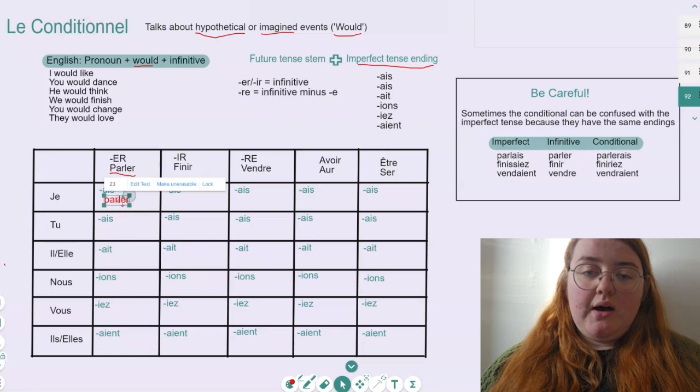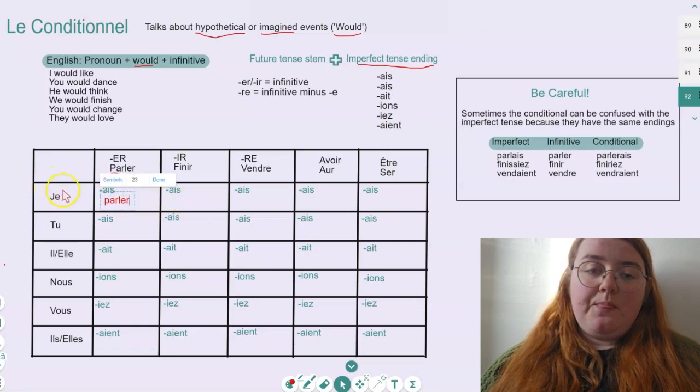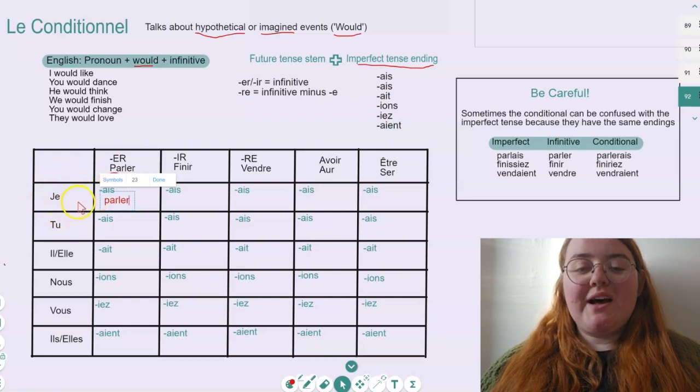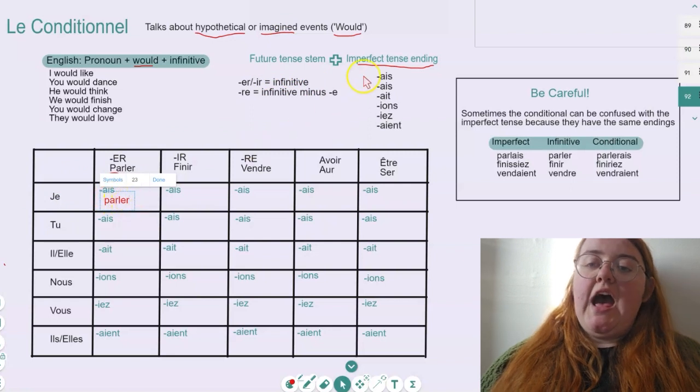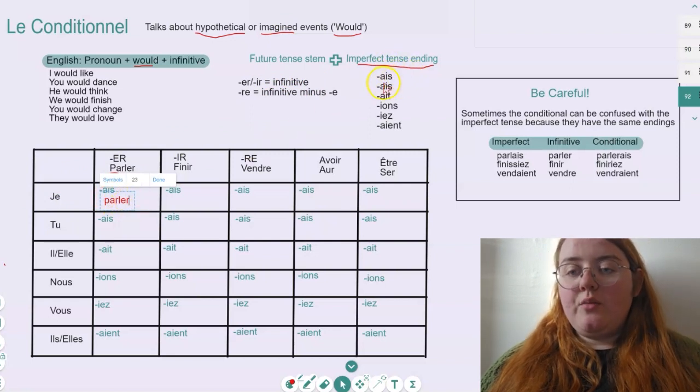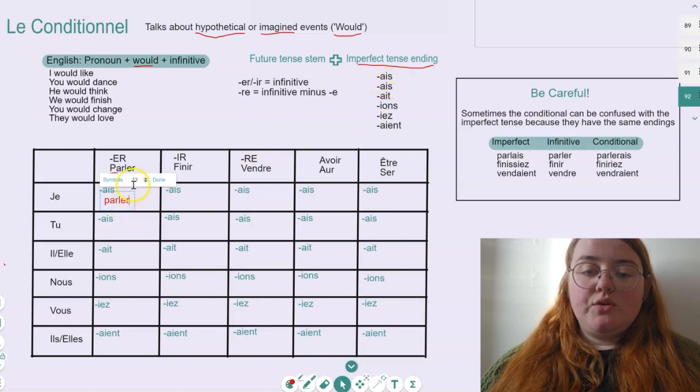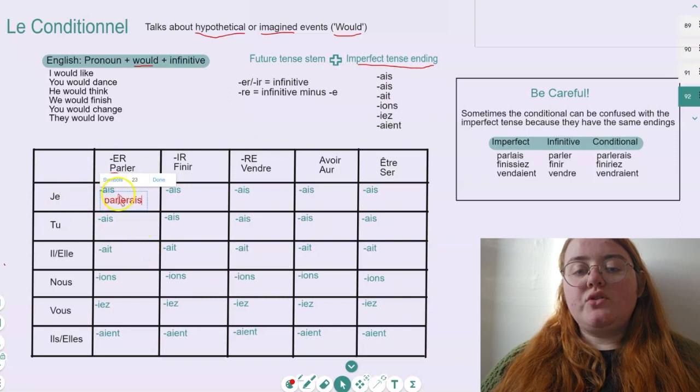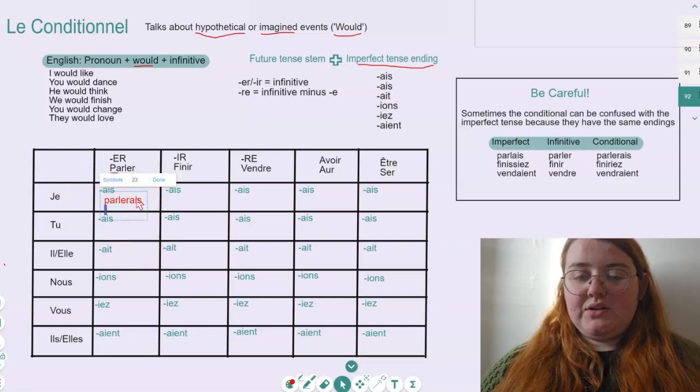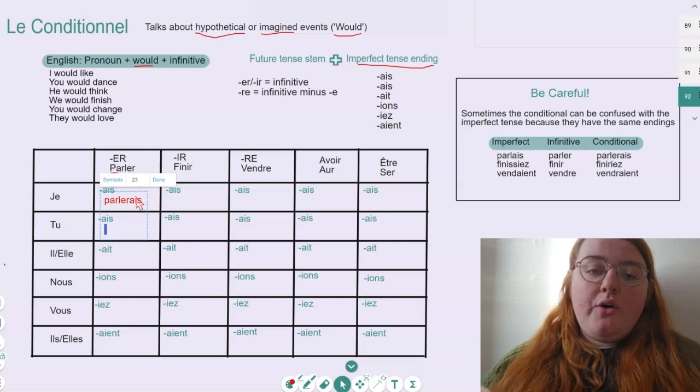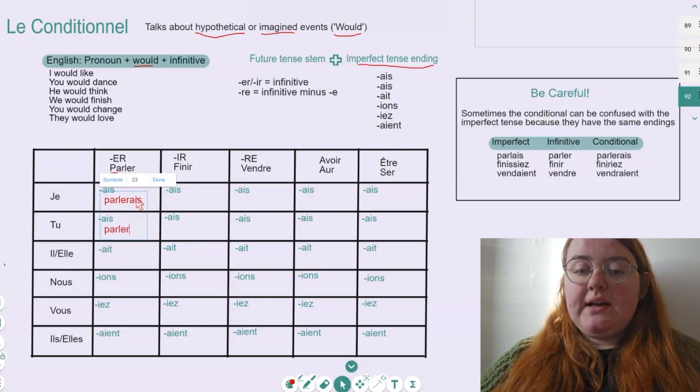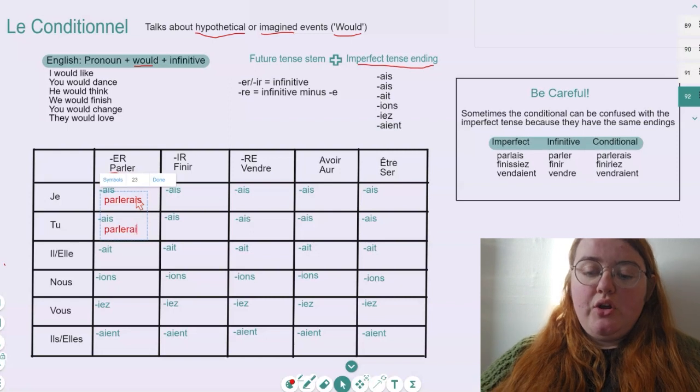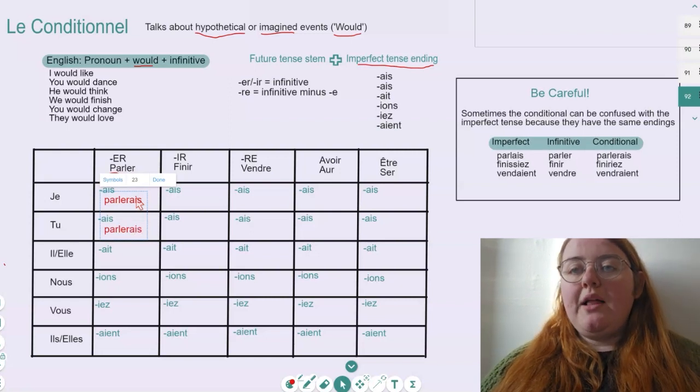Now, if we go back to our ER verb, we're starting with je. So if we want to say 'I would speak', we know that our stem is the infinitive parler. And we know that the ending for je in the imperfect tense is A-I-S. So we add that to our stem, and then we get je parlerais. Let's do the next one. We have an ER verb, which means our stem is the infinitive, parler, and then we add our ending, so we get tu parlerais.